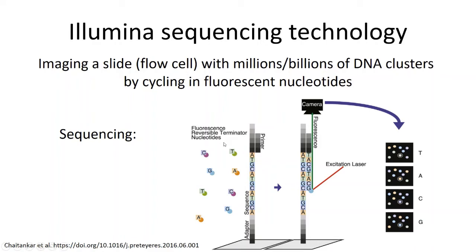Then the reversible terminator is removed, another set of nucleotides is flowed in, one more nucleotide is incorporated, and so on and so forth. And depending on the length of your read, that will determine the number of times this cycle occurs. So for a 50 base read, you're going to have 50 cycles of nucleotides being incorporated and images being taken on the slide.